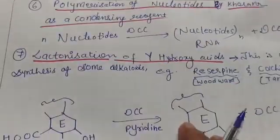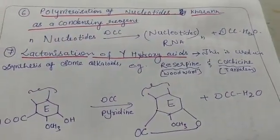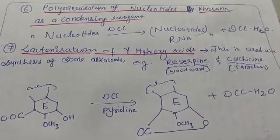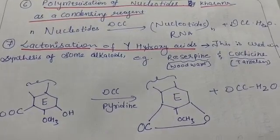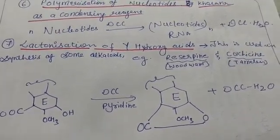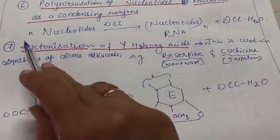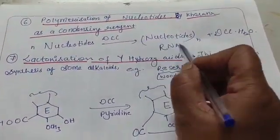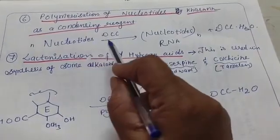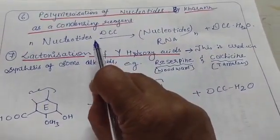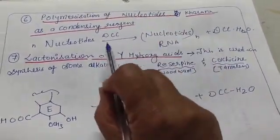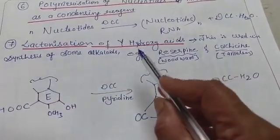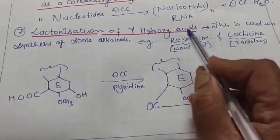The next application is the polymerization of nucleotides, carried out by scientist Khorana. DCC is used as a condensing reagent: many nucleotide units are taken and converted to a polymer of nucleotides. This reaction is very helpful in the synthesis of proteins and other biomolecules.